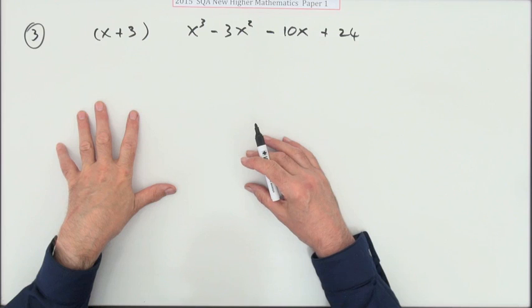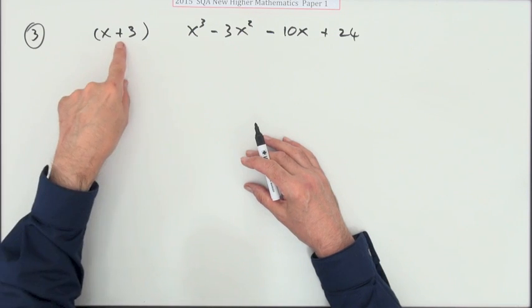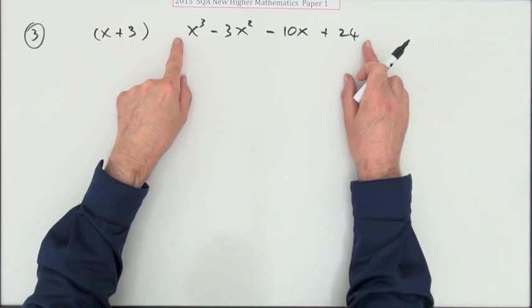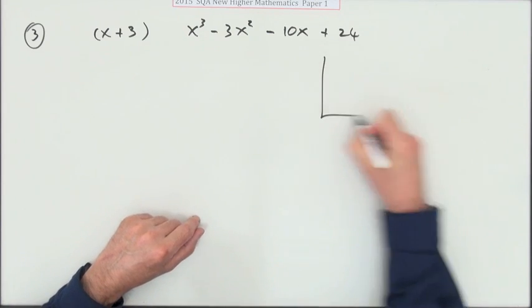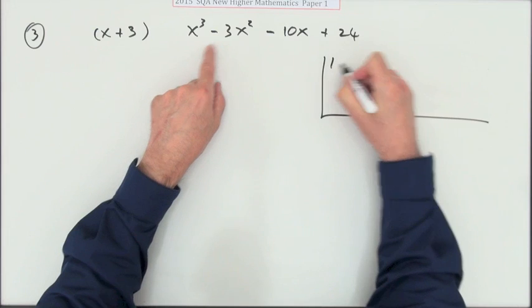So number three from paper one of the new higher: you have to show that this is a factor of this cubic expression and then hence factorize it fully. Well, you'll be using synthetic division with the coefficients 1, negative 3, negative 10, 24.